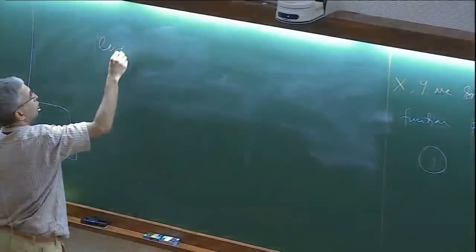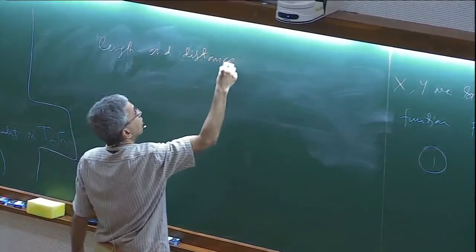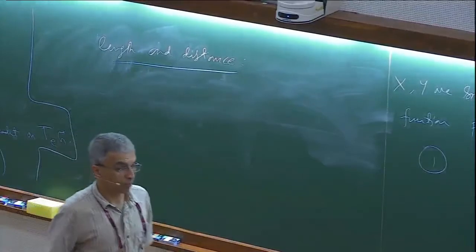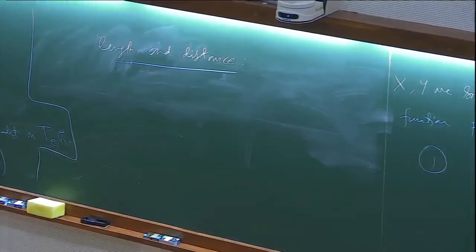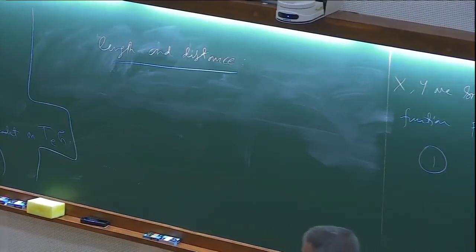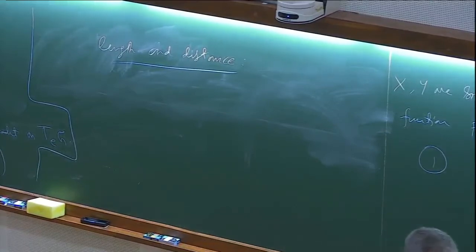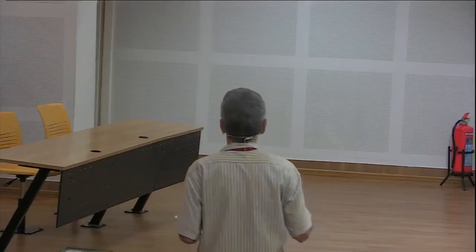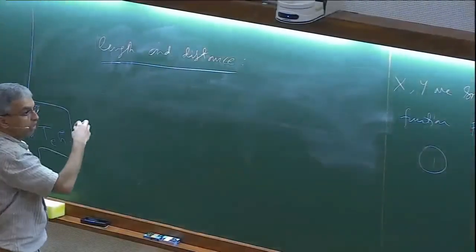The main point about having a Riemannian metric is that we can talk about the length of a curve in the manifold. Once we have that, it is just one step to define the distance between two points — you look at all curves connecting two points and take the infimum of their lengths.